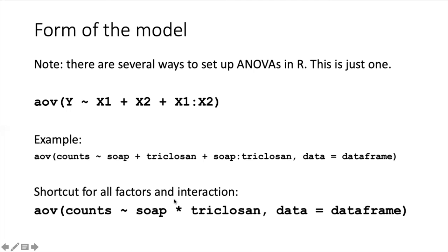There's actually a shortcut way for writing the model if we want to include the full factorial form of the experiment. In other words, if we want every combination of soap, triclosan, and its interaction, we can use a star. It's possible to have ANOVAs with more than two factors, like a three factor ANOVA.